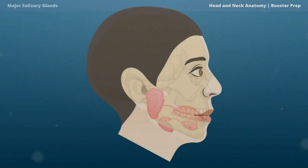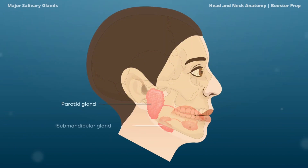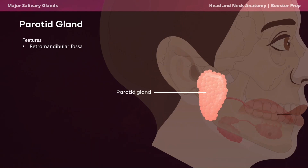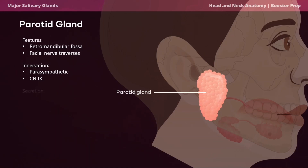The three major salivary glands are the parotid, submandibular, and sublingual glands. The parotid gland is the largest, located in the retromandibular fossa, inferior to the zygomatic arch and posterior to the masseter. It has a superficial and deep lobe separated by the facial nerve, though the facial nerve does not innervate this gland. Vascular supply includes the external carotid artery and the retromandibular vein. The parotid gland receives parasympathetic innervation via the glossopharyngeal nerve.